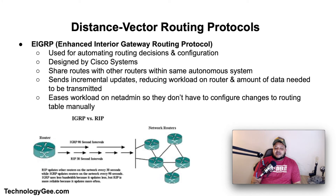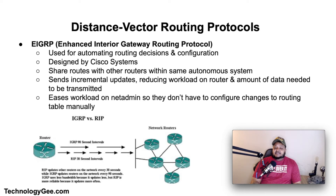The next type of distance vector routing protocol is EIGRP, or Enhanced Interior Gateway Routing Protocol. EIGRP is an advanced distance vector routing protocol used on computer networks for automating routing decisions and configuration. The protocol was designed by Cisco Systems as a proprietary tool that was only available on Cisco routers. Functionality of EIGRP was converted to an open standard in 2013.